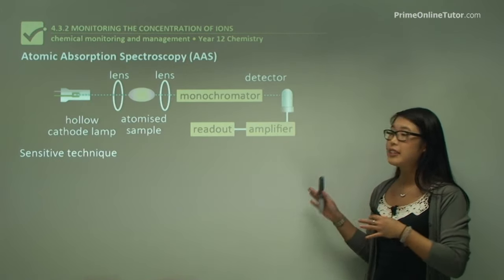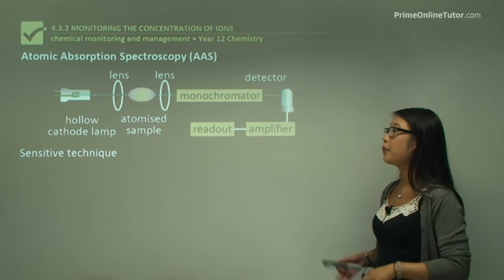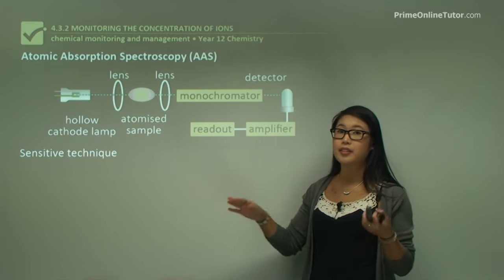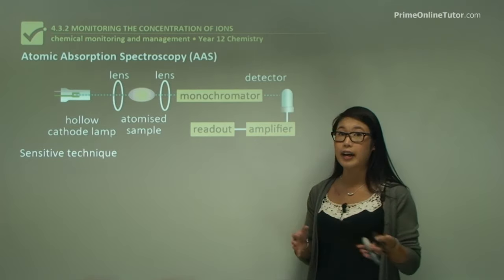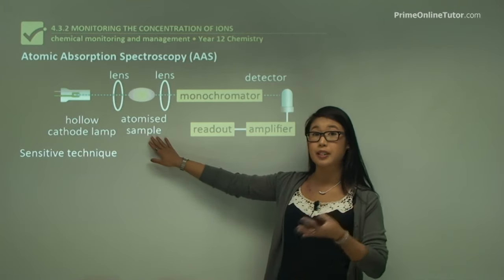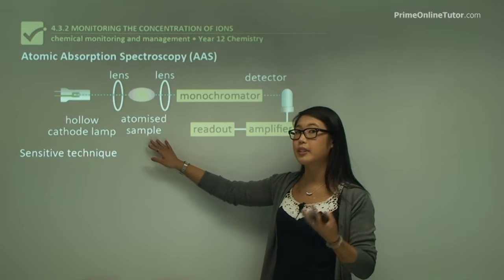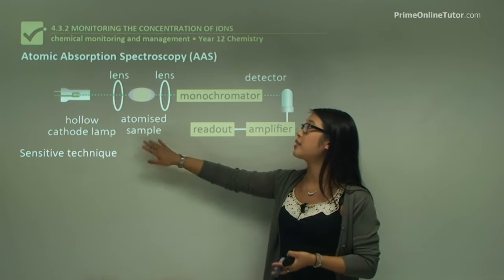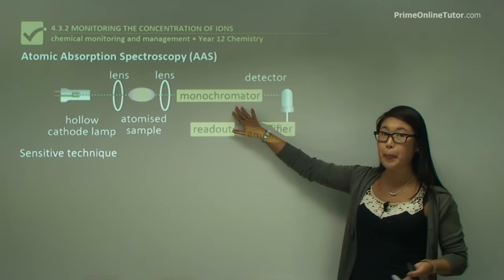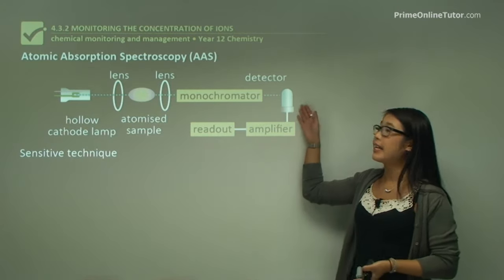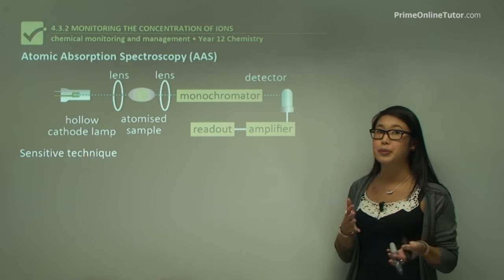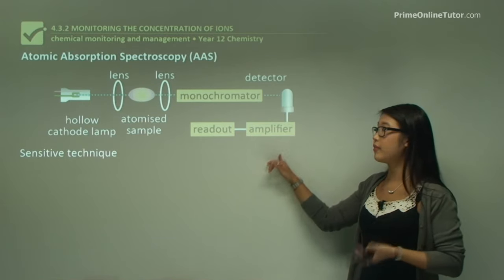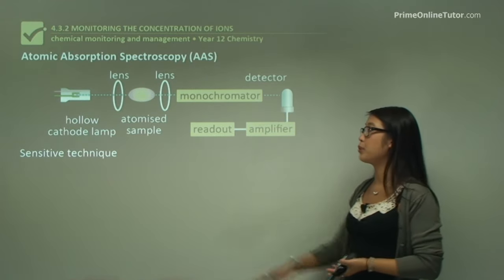This is a layout of how AAS works. First, a hollow cathode lamp is used to emit light, which is then passed through a sample. The sample has to be atomized because liquids and solids don't have light passed through them. Light passes through into the monochromator and is then detected with the detector. Usually the absorption is quite low, so we have to amplify the signal, and then we get the absorption as a readout.